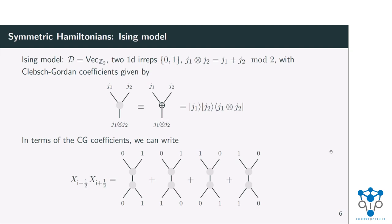To give an example, let's see how this Ising model works. For the Ising model, this fusion category is just Z2 — it has two objects, 0 and 1, and the fusion rules are just addition modulo 2, as you would expect for Z2. In this case the Clebsch-Gordan coefficients are simply given by a tensor that's like the same kind of tensor entering the definition of a CNOT gate. And in terms of these Clebsch-Gordan coefficients, you can write the symmetric term XX as a specific combination — this is just this operator XX acting on two sites.